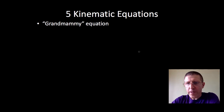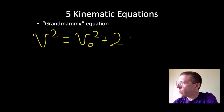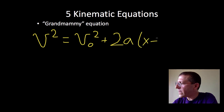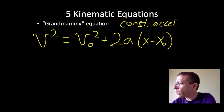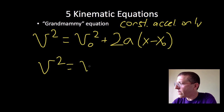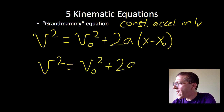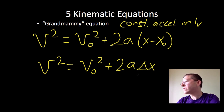The grandmammy equation — we must have gender equality — is: v final squared equals v initial squared plus 2a times (x minus x naught). This one, like the granddaddy equation, is for constant acceleration only. I like to write it as: v final squared equals v initial squared plus 2a delta x. It must be delta x — not just x final.